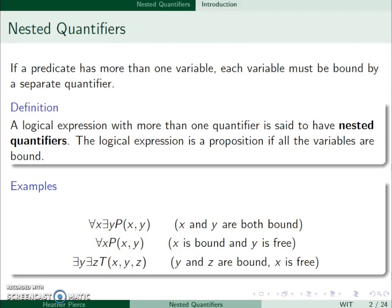In the last one, there exists a y and there exists a z such that T(x,y,z). In this case, we can see that x is free, so this is not a proposition either.